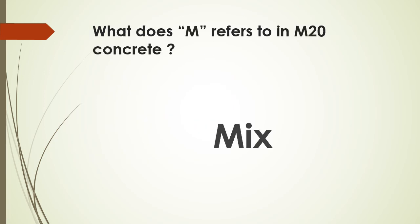What does M refer to in M20 concrete? As discussed, M15, M20, and M25 — the M refers to mix proportion, or in general, mix.